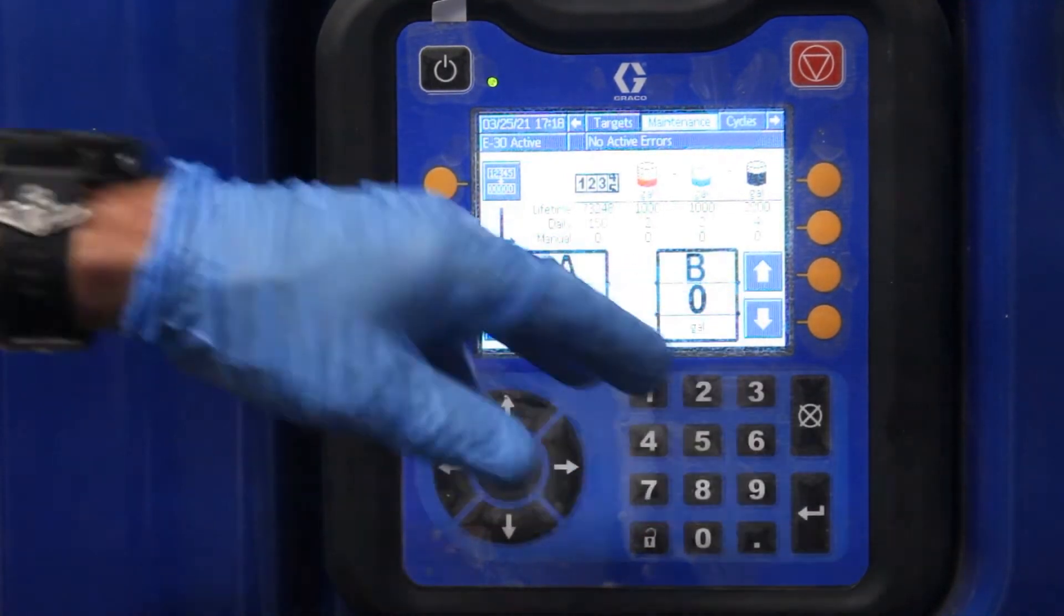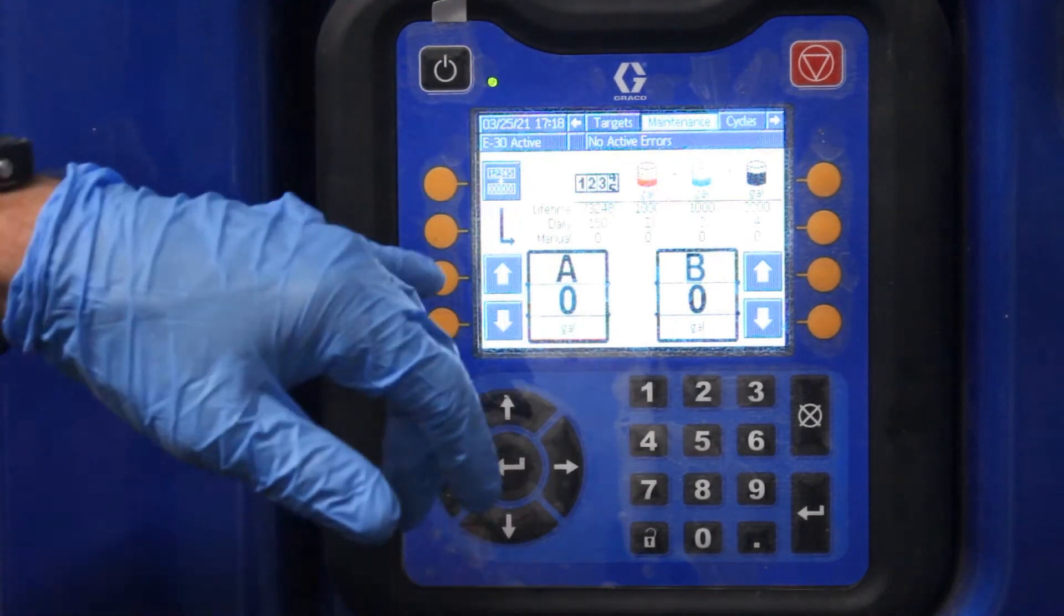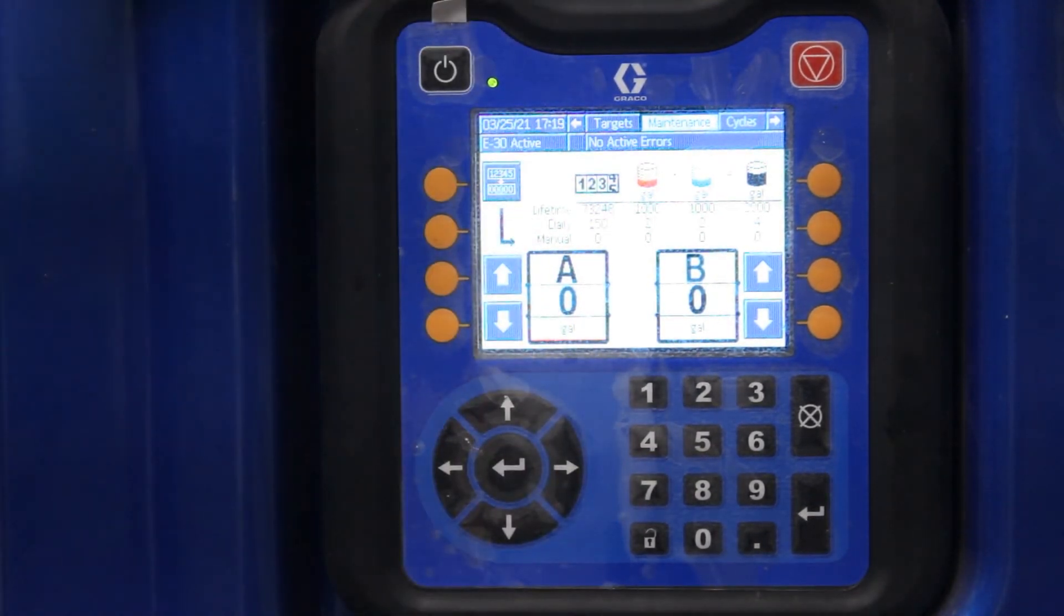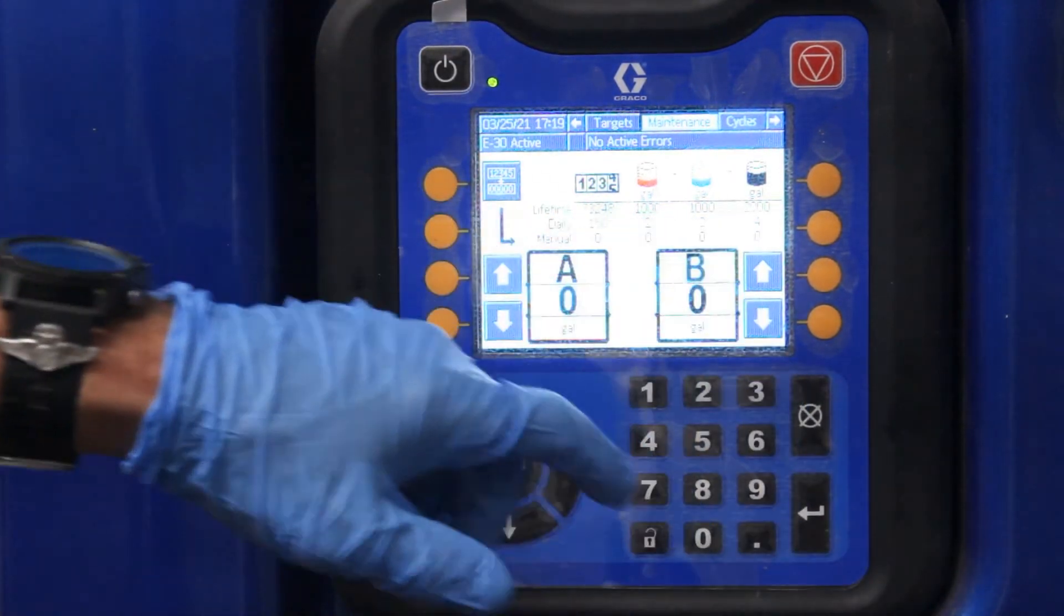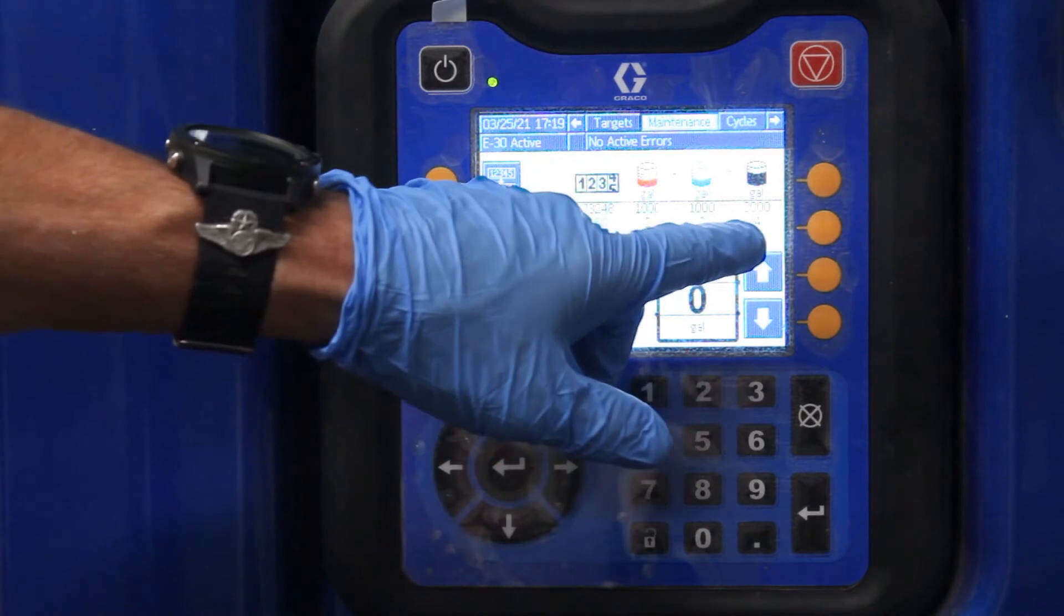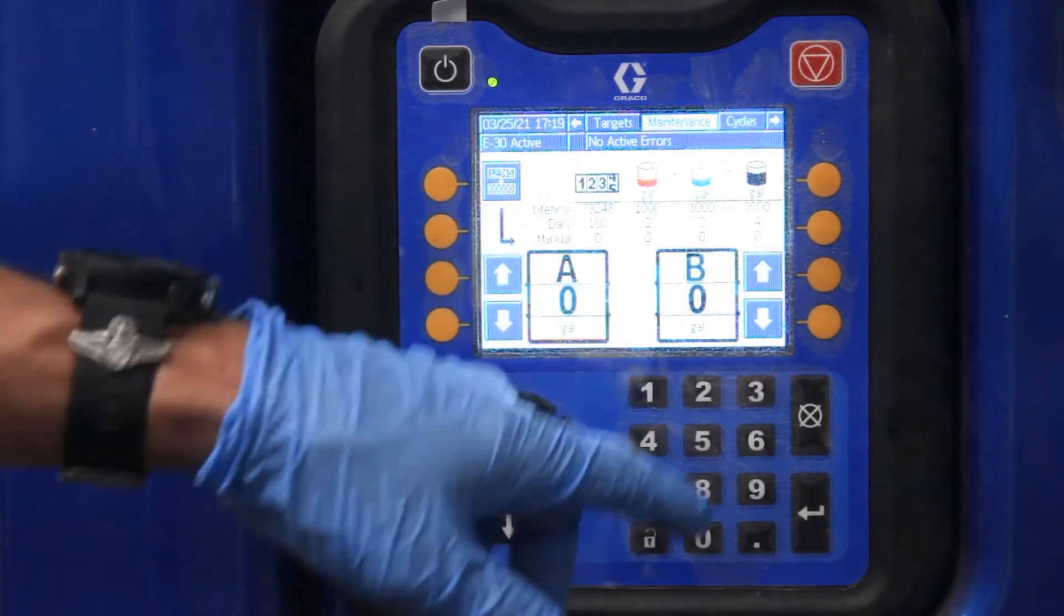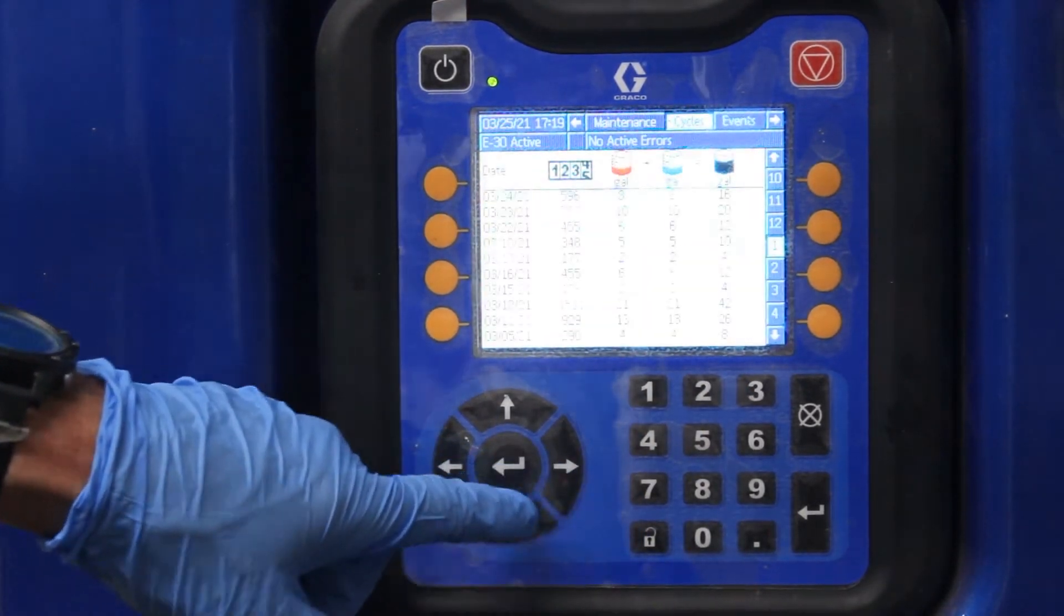So you can do that with the A and B side. If you notice, it's got a lifetime, daily, and manual. What this is telling you is daily how much you used. So today, just doing test sprays, we used four gallons.